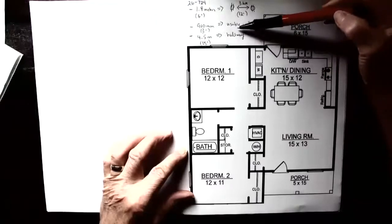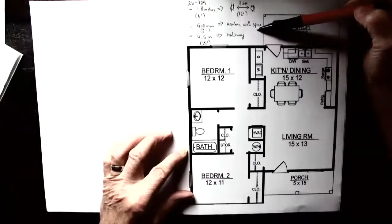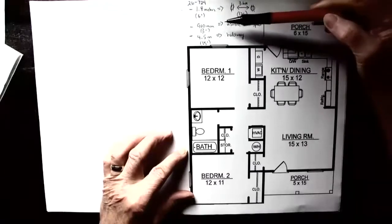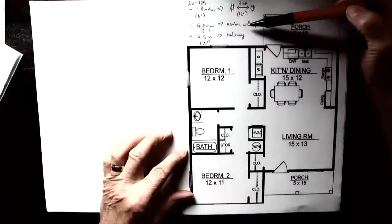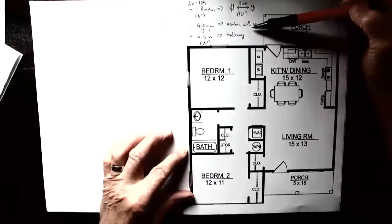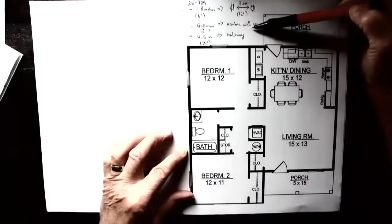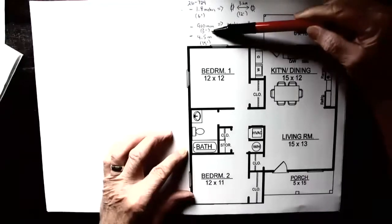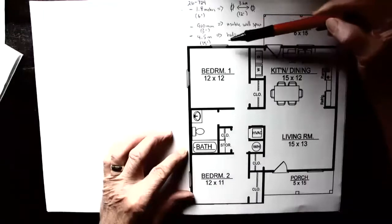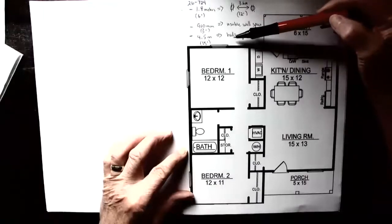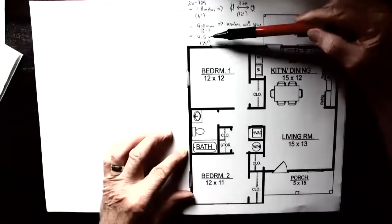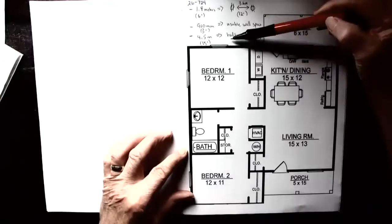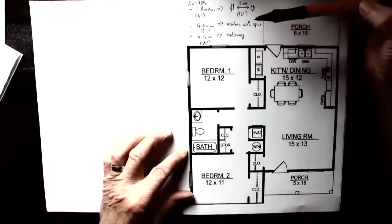That rule also talks about usable wall space. If a wall is 900 millimeters or more, they deem it as a wall that you might need a receptacle on, so by code we have to put one. 900 millimeters is approximately 3 feet. In a hallway, no point can be more than 4.5 meters away from a receptacle, and that is 15 feet.